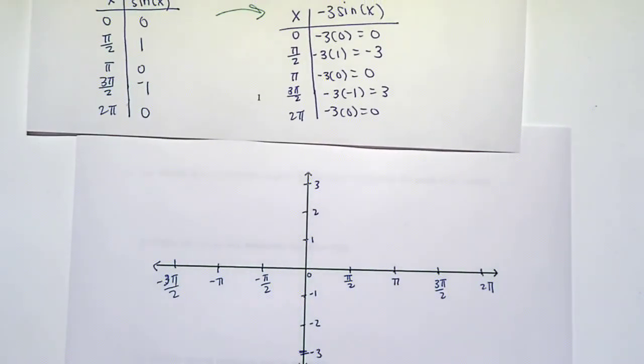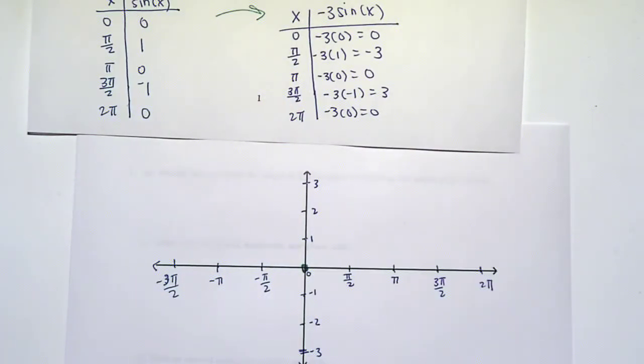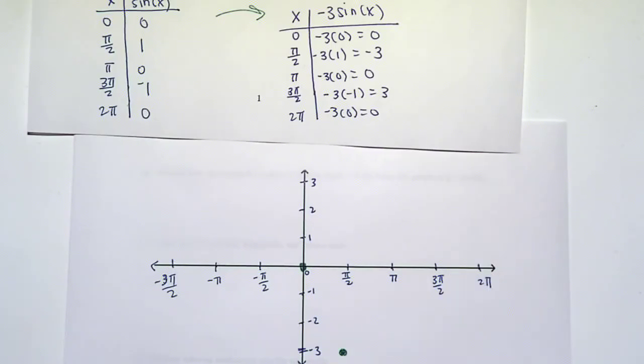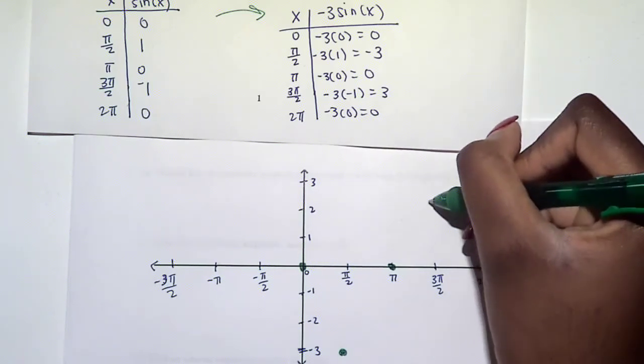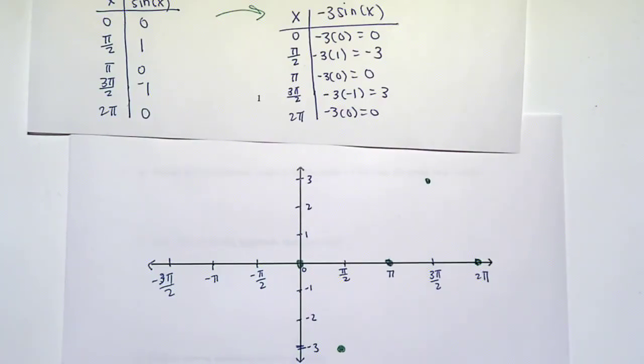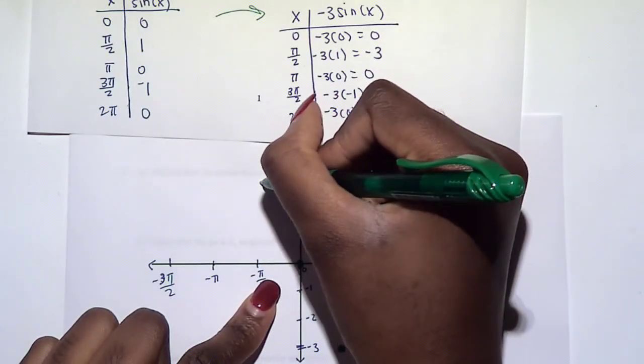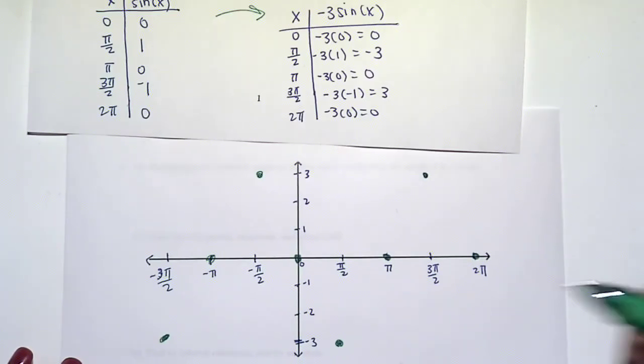At x equals 0, our new function is at 0. At x equals π/2, our new function is negative 3. At x equals π, we're at 0. At 3π/2, we are at 3. At 2π, we are at 0. So notice, 0, negative 3, 0, 3, 0. It's going to do the same thing here. At 0, we're going to go up to 3, 0, negative 3. These periodic properties of sine and cosine are so helpful.